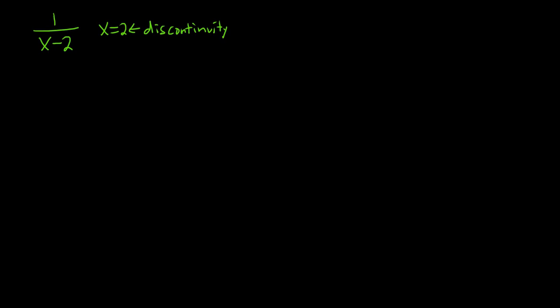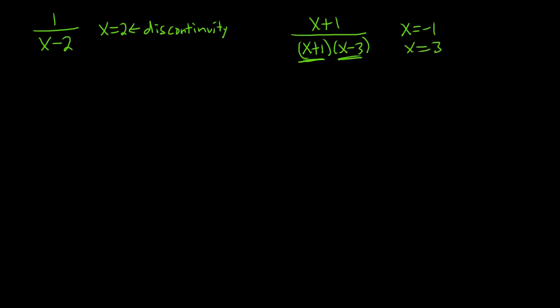Another example would be something like x plus 1 over (x plus 1)(x minus 3). This function has two places where it's not continuous. It's not continuous at negative 1, because that makes the bottom 0, and also at 3, because that makes the bottom 0 as well. So both of these are discontinuities.